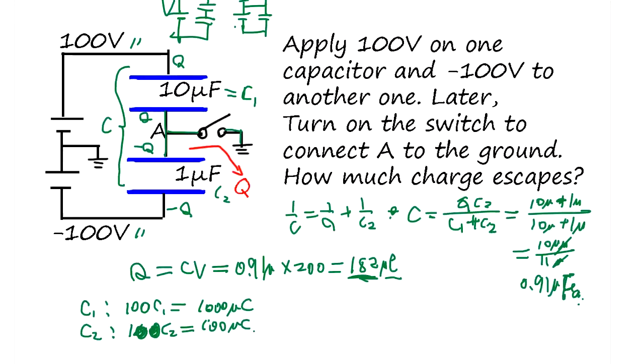You have to know this is going to be positive here and this is going to be negative. Q1 is negative, so this is negative charge accumulated. All together: negative 1000 microcoulombs plus 100 microcoulombs equals minus 900 microcoulombs.